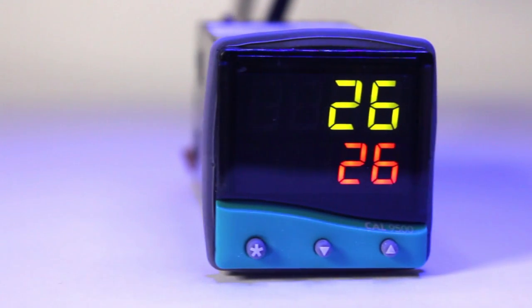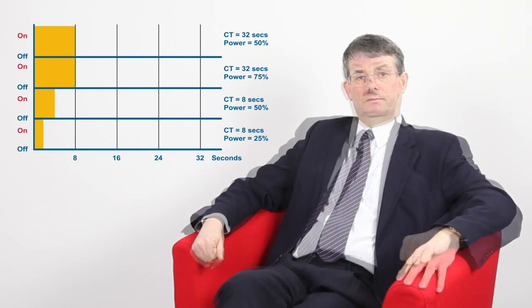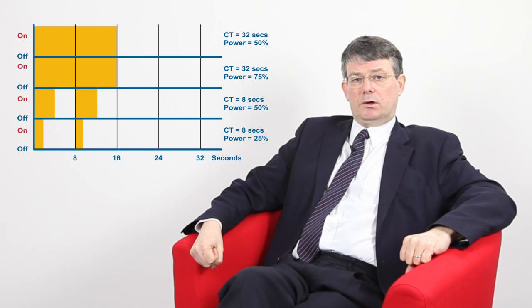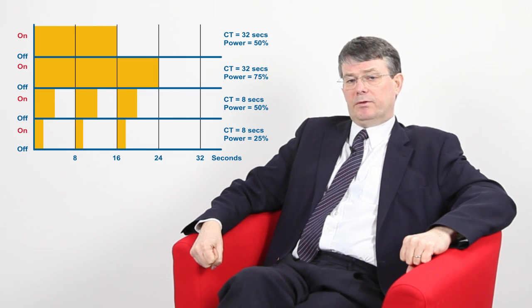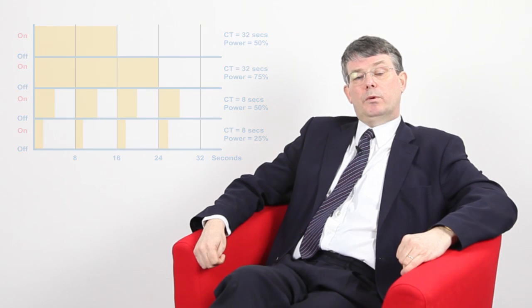There are some processes where it is not appropriate to use proportional control. For example, if you have a refrigerator and you are switching the compressor, you would have to use on-off control. A compressor cannot be turned on and off frequently, as would happen with proportional control. Even if the cycle time was set long, it would still switch more often than would be desired. For example, if you set your cycle time to 200 seconds, at 5% of power the output would only be on for 10 seconds, and at 95% the output would be off for 10 seconds. Neither would be good for the compressor.